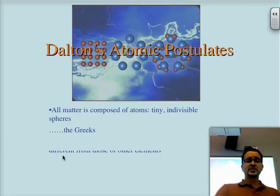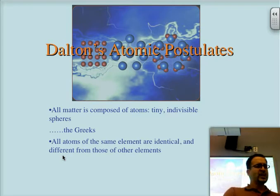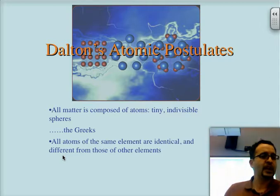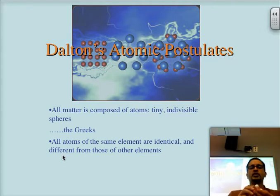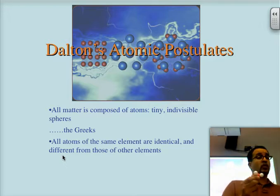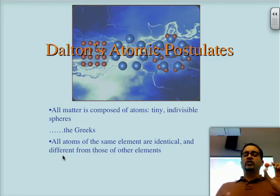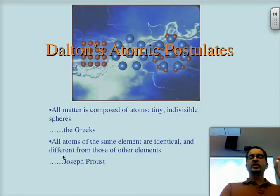The second thing that he says is that all atoms of the same element are identical in all of their properties and different from atoms of different elements. How did he get to that? If we have a compound like water — composed of one atom of oxygen and two atoms of hydrogen — and the mass ratio is constant, it means that hydrogen here, in China, or on the moon has to have the same composition and the same properties to bind exactly the same weight to oxygen. That comes mostly from Joseph Proust.